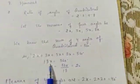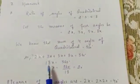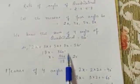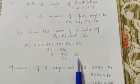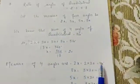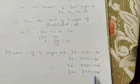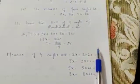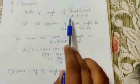On adding them we get 18x = 360 degrees, so x = 360 ÷ 18 = 20 degrees. Now we find the measure of all angles: 2x = 2 × 20 = 40 degrees; 3x = 3 × 20 = 60 degrees; 5x = 5 × 20 = 100 degrees; 8x = 8 × 20 = 160 degrees. On adding all these angles we get 360 degrees.